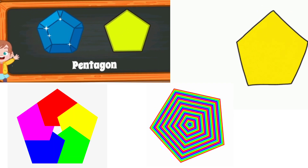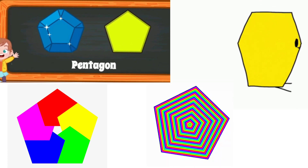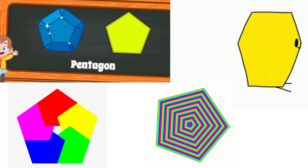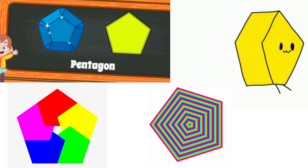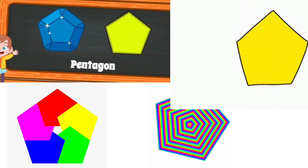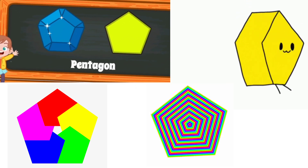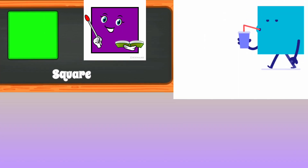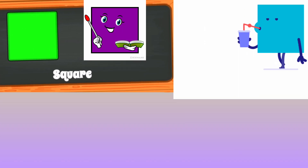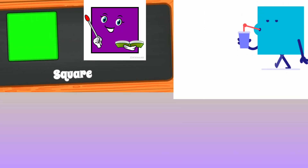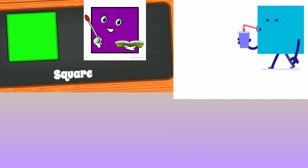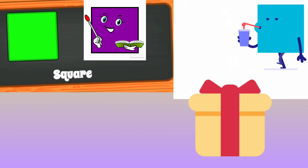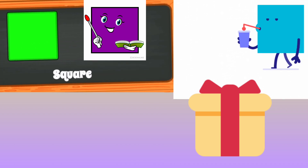This is a pentagon. A pentagon has five sides. This is a square. A square has four equal sides — four sides are equal. The gift box is in square shape.